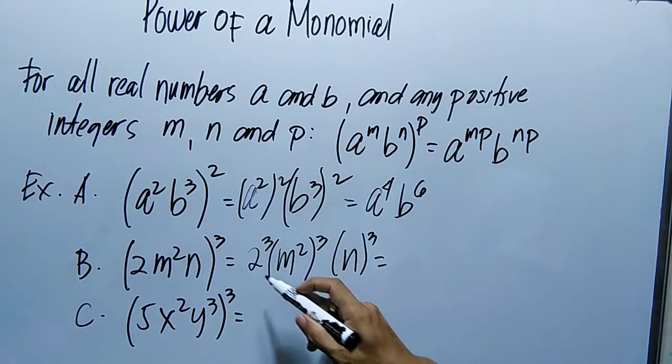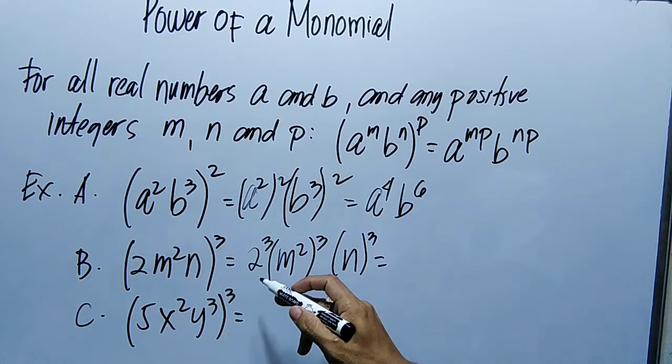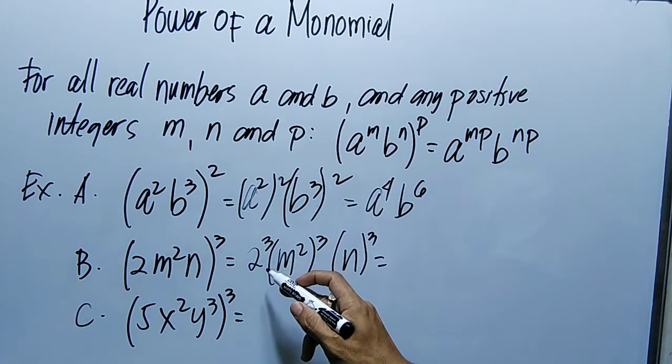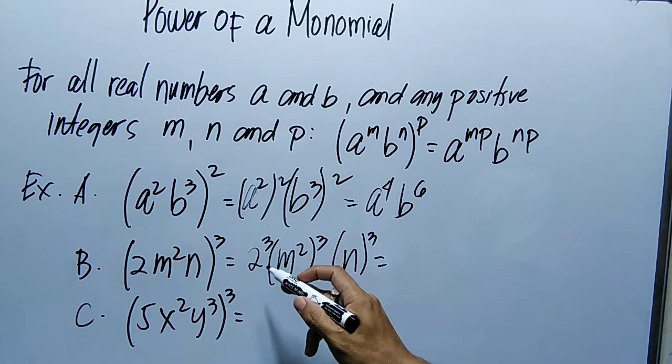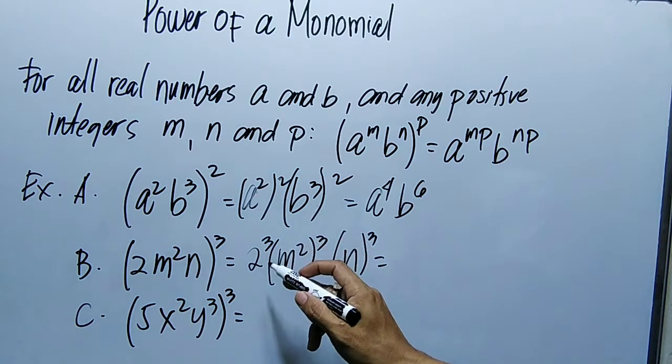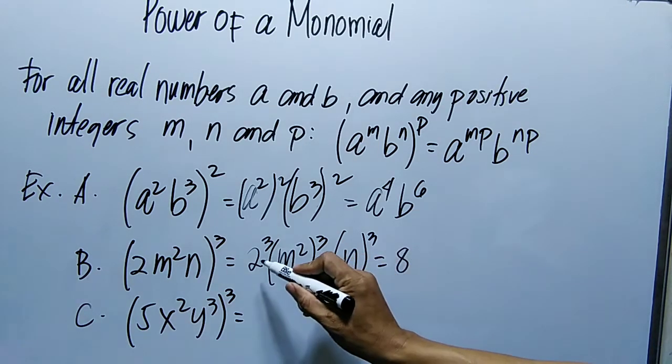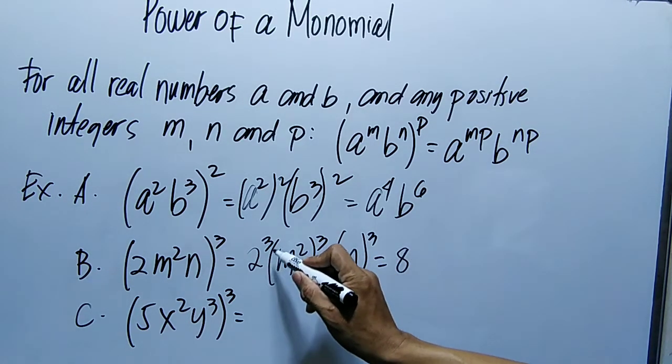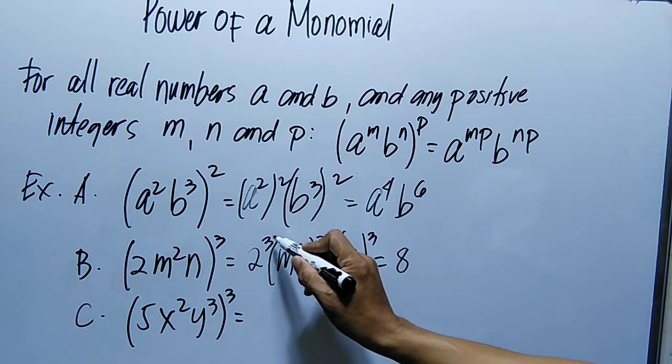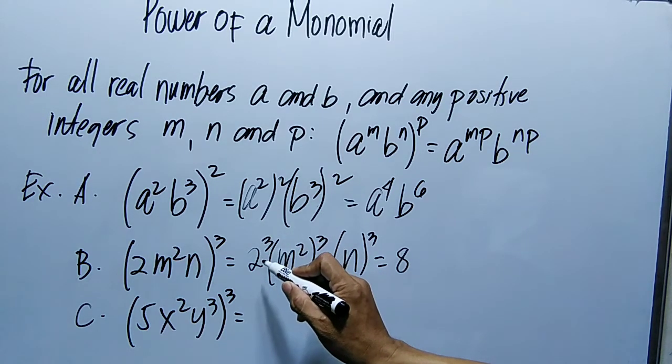So equals, si 2, kailangan natin multiply ito tatlong beses. So 2 times 2, that is 4, times 2, that is 8. Again, bakit siya nagiging 8? Si 2, multiply natin 3 times. 2 times 2, 4 times 2, 8.